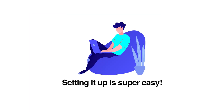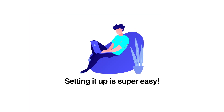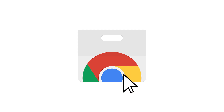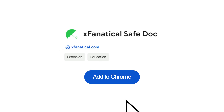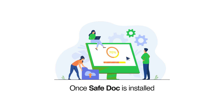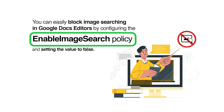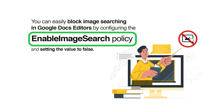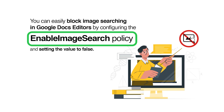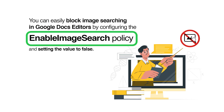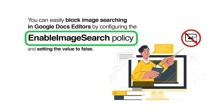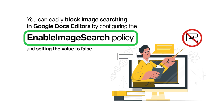Setting it up is super easy. Just head to the Chrome Web Store, search for Safe Doc, then click Add to Chrome to add this extension. Once it's installed, you can easily block image searching in Google Docs editors by configuring the Enable Image Search Policy and setting the value to false.